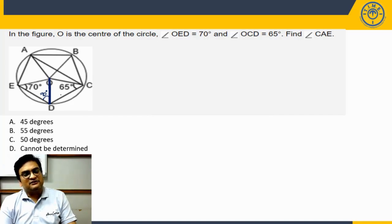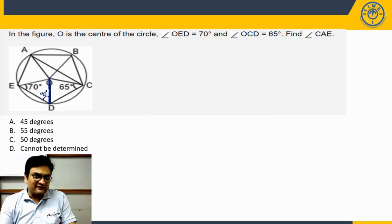Similarly, in triangle ODC, this is also isosceles, same logic. This is radius, OD is radius, OC is also radius. Thus angles opposite to equal sides will be equal. So if this is 65, this is also going to be 65.